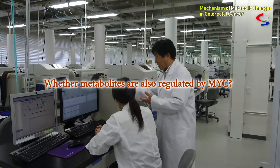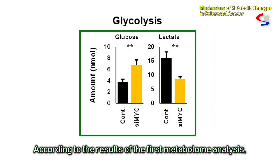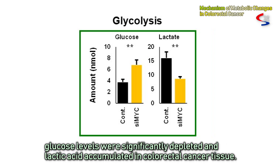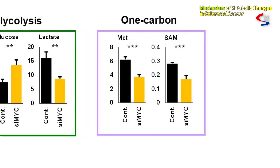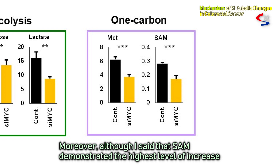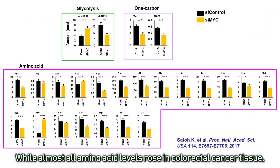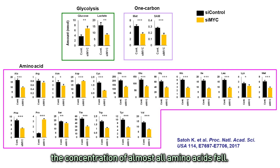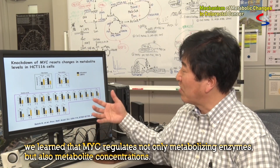Next, we looked into whether metabolites are also regulated by MYC. Colorectal cancer cell lines are shown in black and MYC knockdown cells in yellow. According to the results of the first metabolome analysis, glucose levels were significantly depleted and lactic acid accumulated in colorectal cancer tissue — this reversed when MYC was knocked down: glucose increased and lactic acid decreased. Moreover, SAM demonstrated the highest level of increase among colorectal cancer metabolites, but its level decreases when MYC is knocked down. While almost all amino acid levels rose in colorectal cancer tissue, when MYC was knocked down the concentration of almost all amino acids fell. In other words, MYC regulates not only metabolizing enzymes, but also metabolite concentrations.